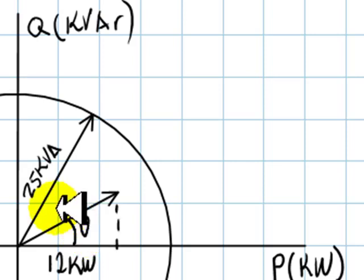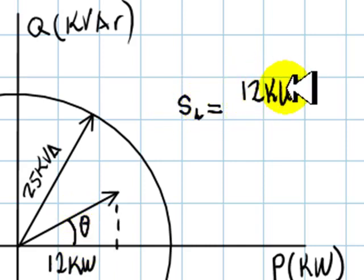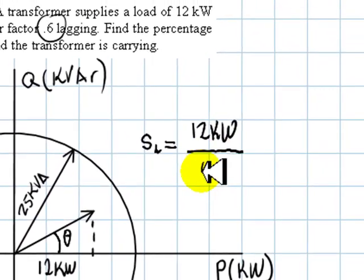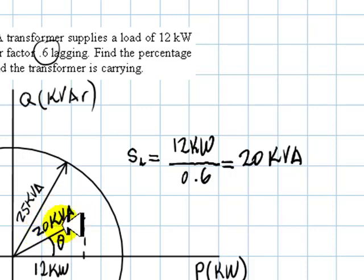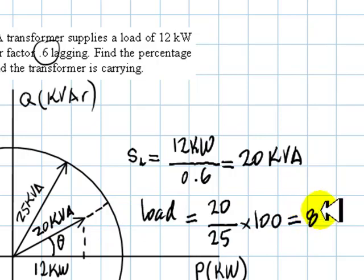The apparent power of the load is 12 kW divided by the cosine of the angle, 0.6. That is 20 kVA. So that load is a load of 20 kVA, which is clearly not up to the full capacity of the transformer. It's not up to 25 kVA. The transformer is loaded only up to 80% of its capabilities.